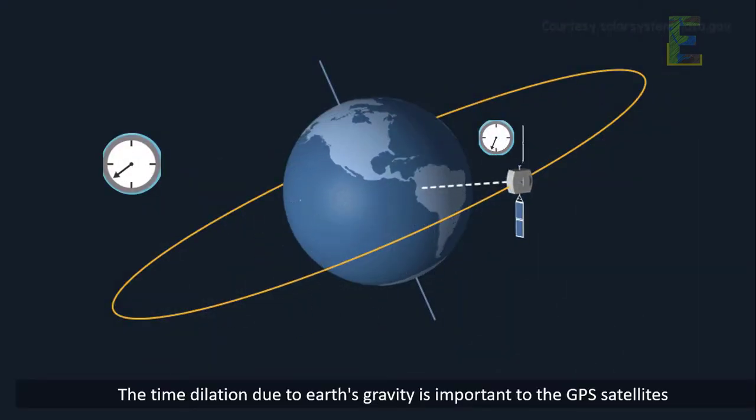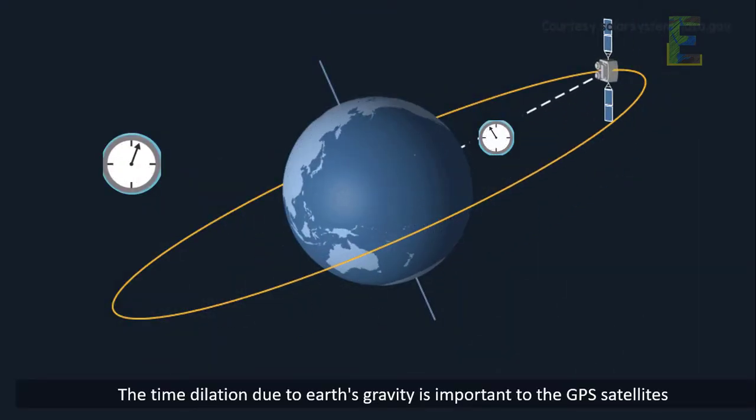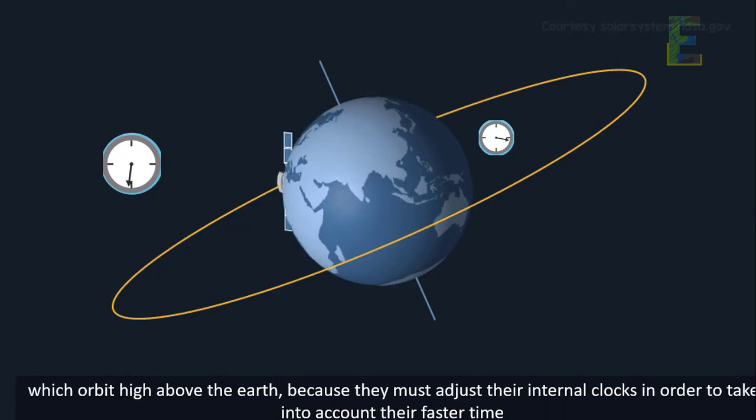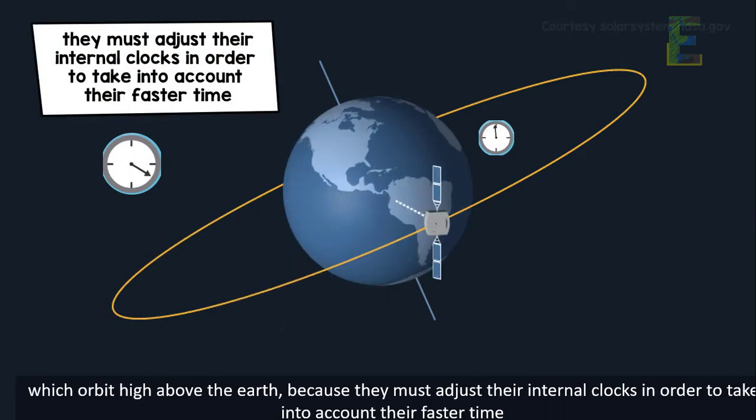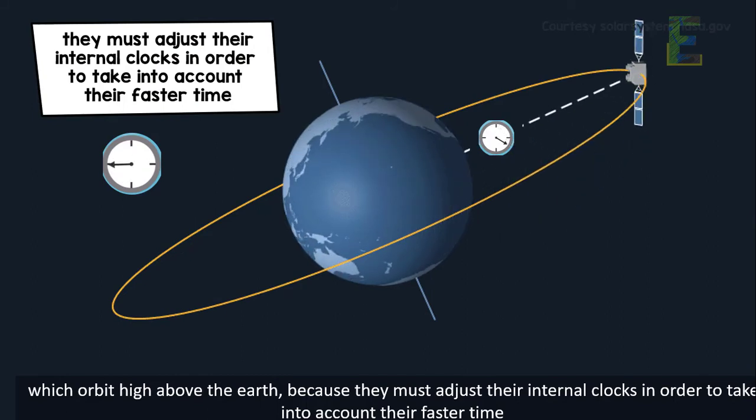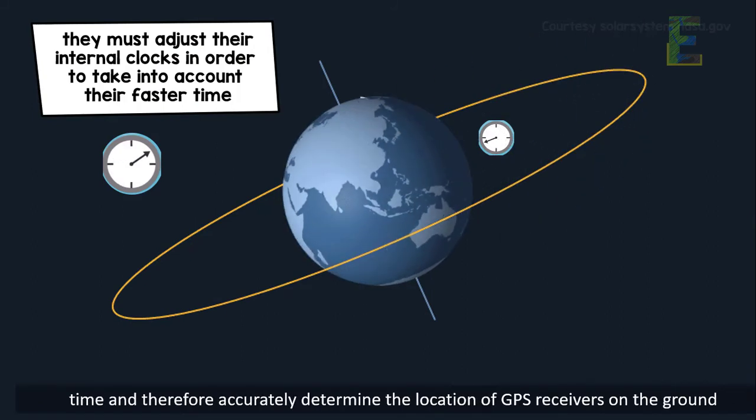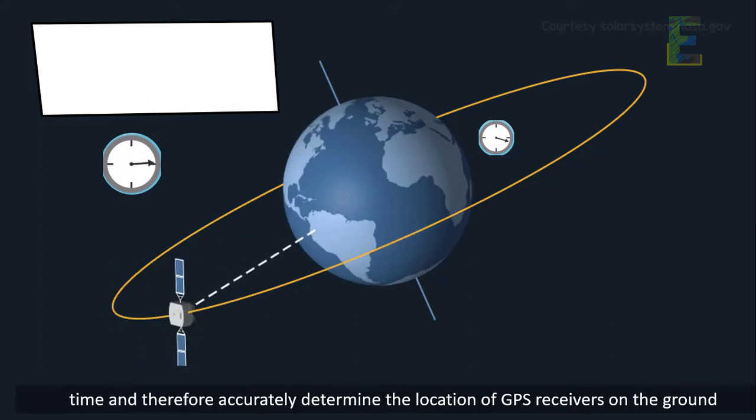The time dilation due to Earth's gravity is important to the GPS satellites, which orbit high above the Earth, because they must adjust their internal clocks in order to take into account their faster time and therefore accurately determine the location of GPS receivers on the ground.